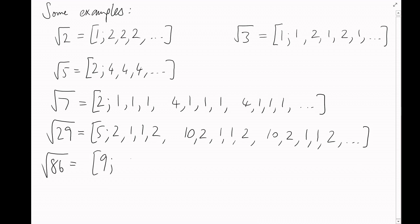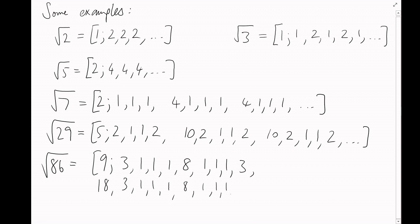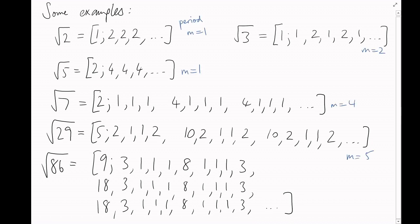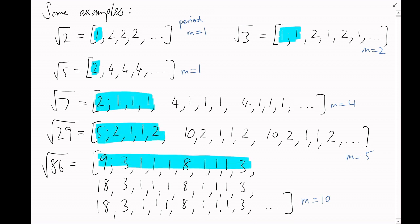And √86 = [9; 3, 1, 1, 1, 8, 1, 1, 1, 3, 18, 3, 1, 1, 1, 8, 1, 1, 1, 3, 18, ...]. Notice that they're all periodic: √2 has period 1, √3 has period 2, and so on. For each with period m, I'm highlighting the first m values in blue and the next m in yellow. The yellow section repeats, and the blue section is the same as the yellow section apart from the first entry.